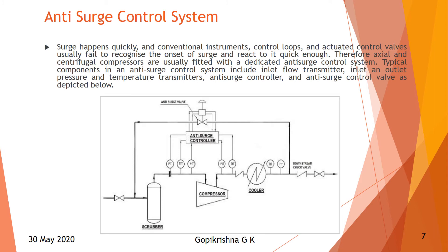The anti-surge control system: surge happens quickly and conventional control loops and actuated control loops usually fail to recognize the onset of surge and react quickly enough. So axial and centrifugal compressors are usually fitted with a dedicated anti-surge control system. Typical components include: an inlet flow meter, flow transmitter, inlet and outlet pressure and temperature transmitters of the compressor, an anti-surge controller, and a high-speed anti-surge control valve.